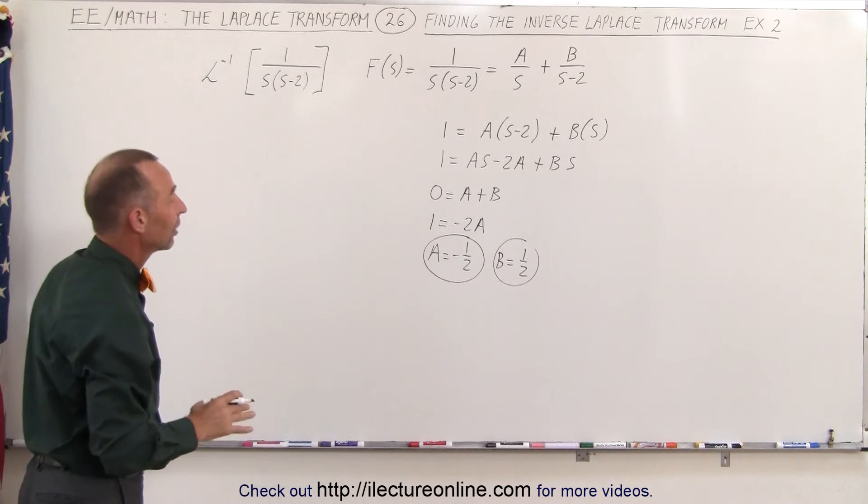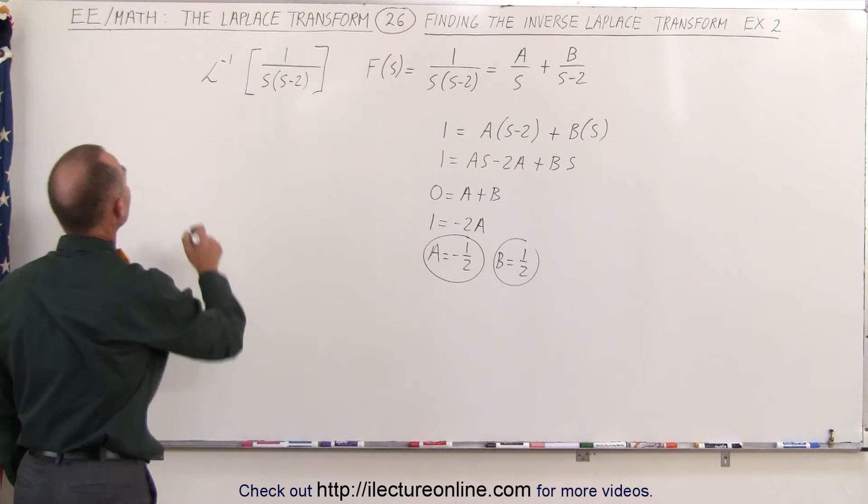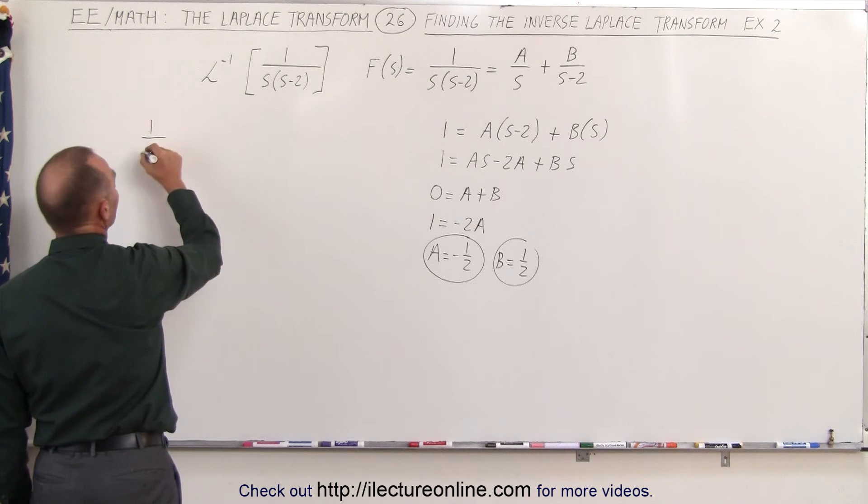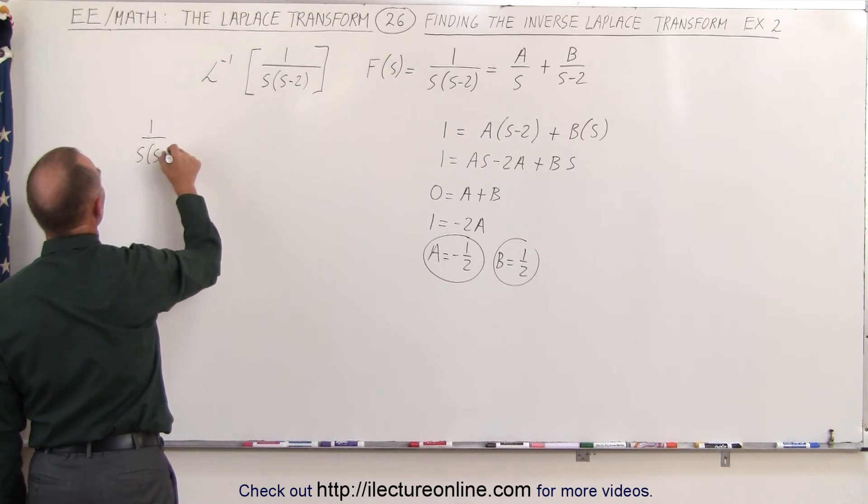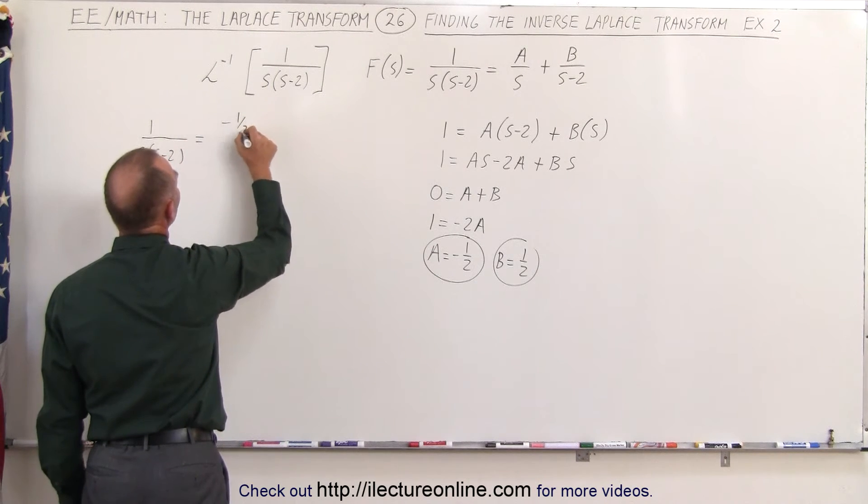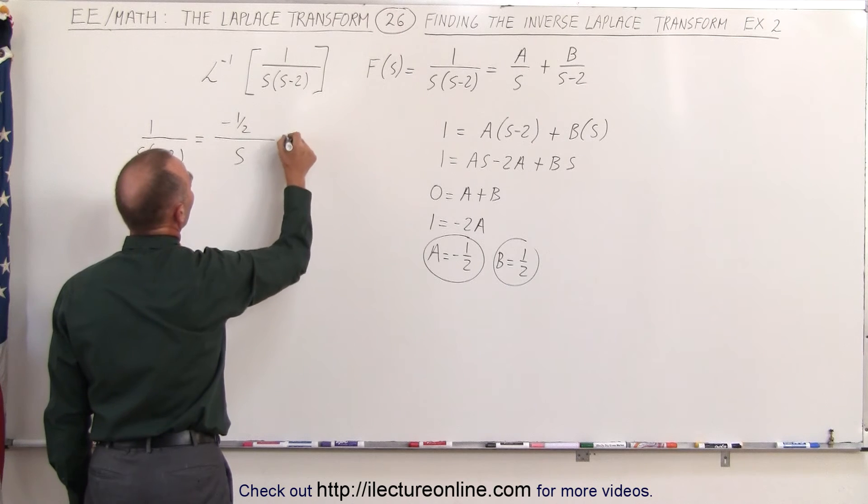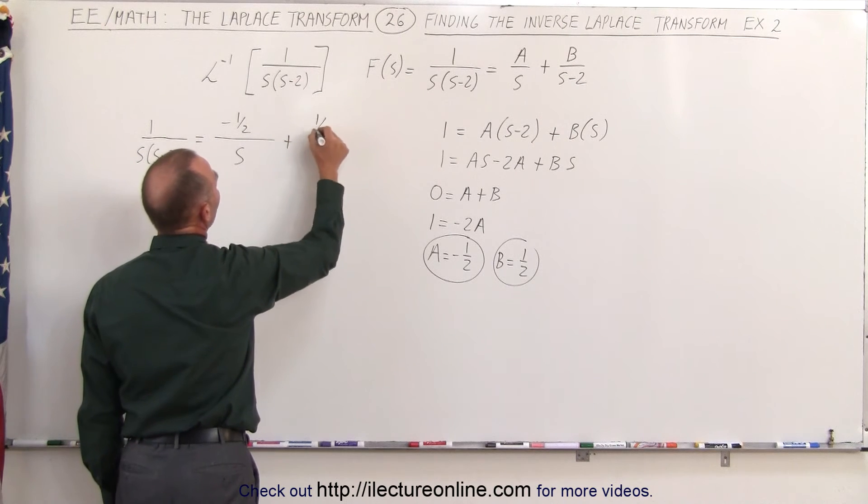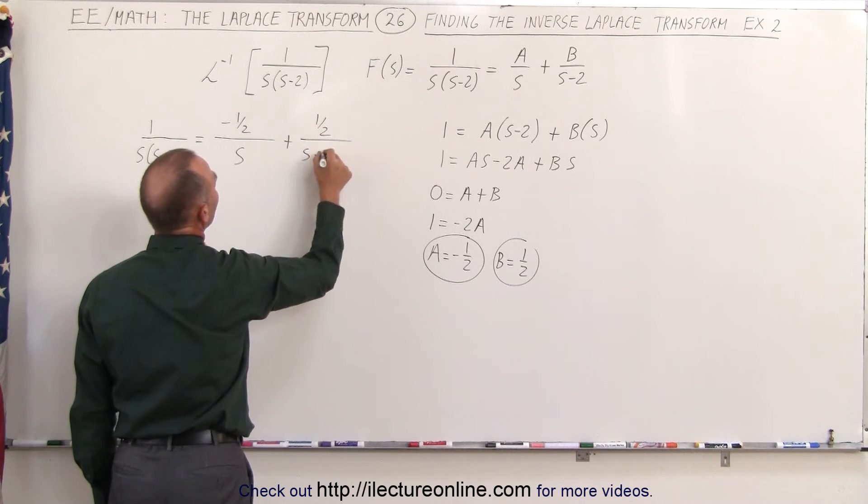Now that I have the coefficients a and b, I can now say that 1 over s times s minus 2 is equal to a, which is minus 1 half, divided by s plus b, which is plus 1 half, divided by s minus 2.